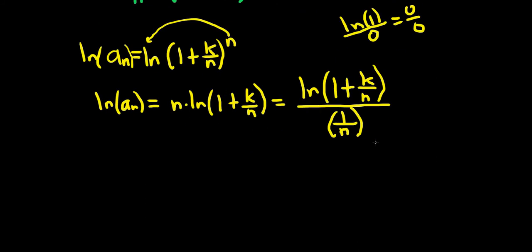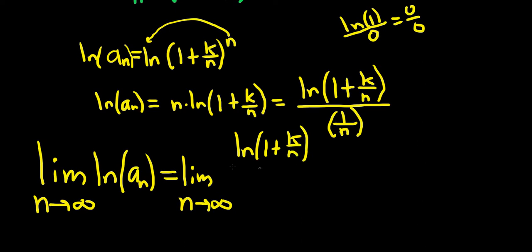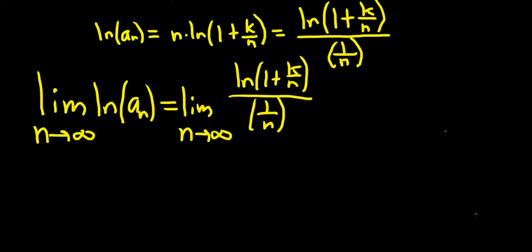L'Hôpital's rule lets you take the limit, so the limit as n goes to infinity of the natural log of a sub n is equal to the limit as n goes to infinity of the natural log of (1 plus k over n) over (1 over n). This has the form 0 over 0, so we can apply L'Hôpital's rule and take the derivative of each piece.